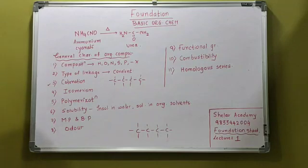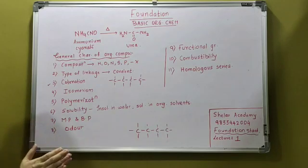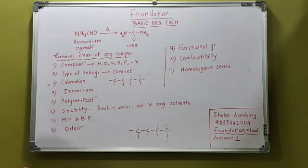The next. What is the type of linkage? Linkage matlab bond. Bond kaise rehega usmein? It's a covalent bond. You know what is a covalent bond? What do I mean by a covalent bond? Sharing. Dono, they are sharing their tiffins. They share the electrons. Which bond is it? It's a covalent bond. So, organic compounds mein, which bond is present? It's a covalent bond.